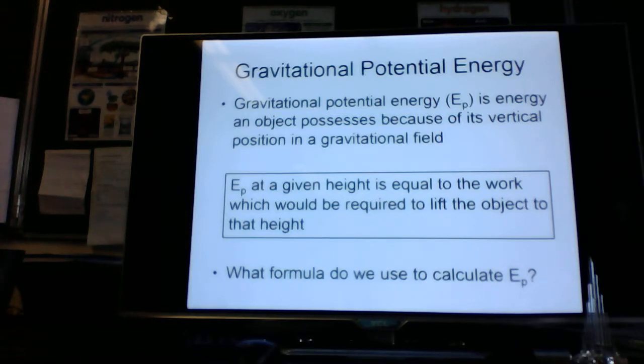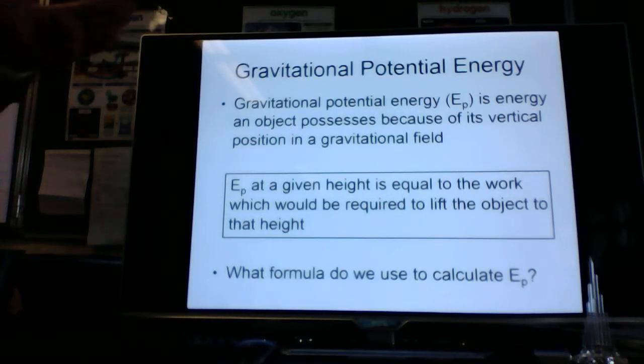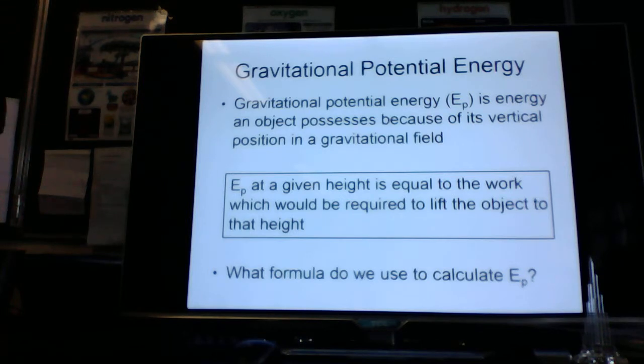So if it's gravitational potential energy, obviously that's against gravity. It's the energy an object possesses because of the height we give it. So at a given height, the potential energy is equal to the work that we've had to give it to lift it to that height.